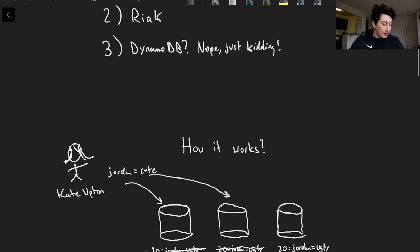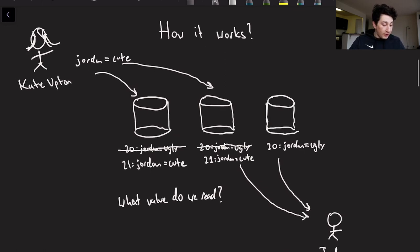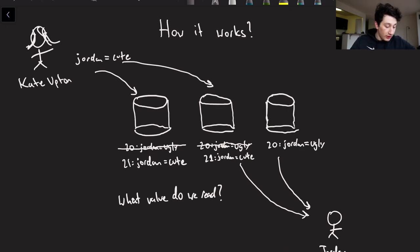Okay, so let's move on. How does this thing actually work? So here's a very realistic scenario. We've got Kate Upton as per usual on the left over here, and she is going to write that Jordan is cute to a few different databases. So let's say that she writes it to two of them.